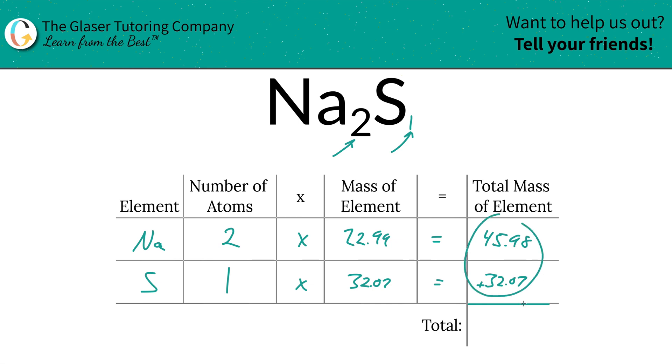And then to find the total mass of the entire compound we simply just need to add this column on up. See how nice and easy that is. So that's going to be 78.05 and that was the first step of the process to find the total mass of the entire compound.